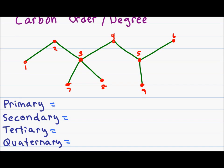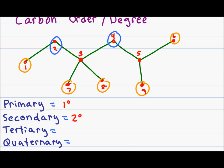A primary carbon atom is defined as a carbon that is attached to just one other carbon. In this molecule, carbon 1 is attached only to carbon 2; carbons 7 and 8 are each attached only to carbon 3; and carbons 6 and 9 are attached only to carbon 5. A secondary carbon atom is a carbon that is attached to just two other carbons. In this example, carbon 2 is attached to 1 and 3, and carbon 4 is attached to 3 and 5.